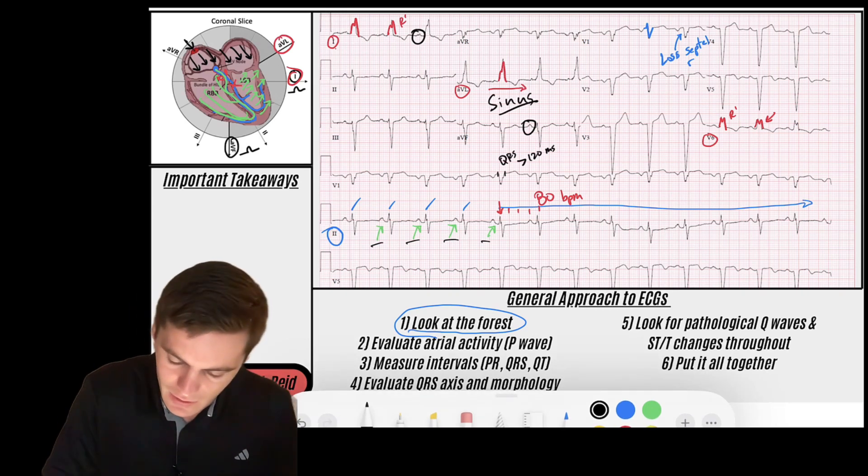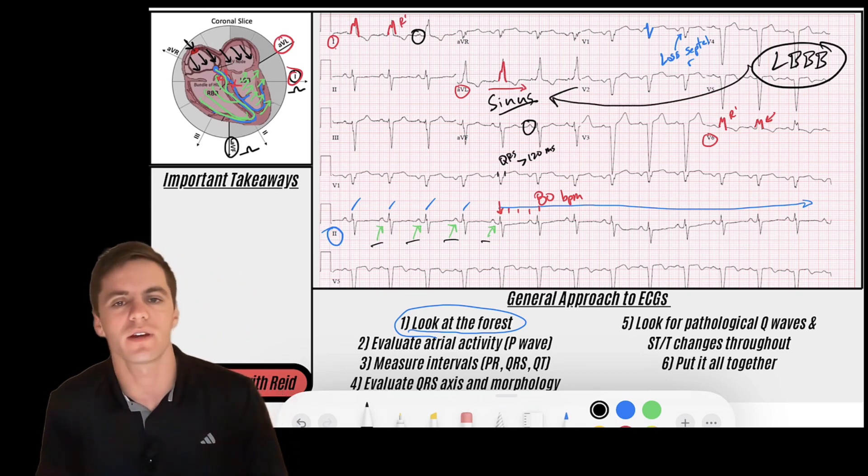It looks like we've got a left bundle branch block morphology that kind of helps us confirm the sinus rhythm with aberrant conduction to the ventricles.